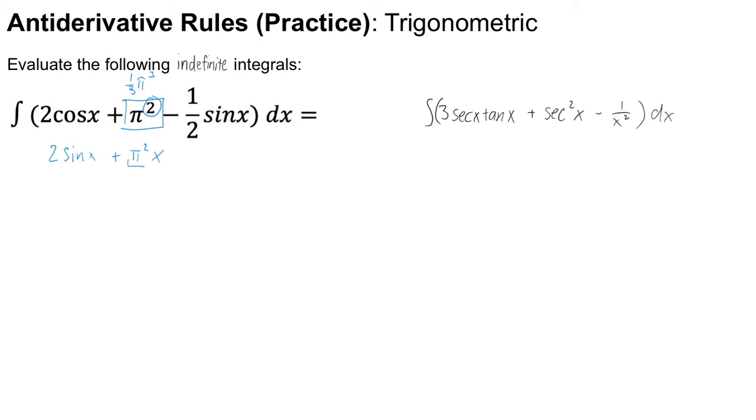Okay, finally the last one we have a negative one half sine x. I know that to get sine of x I need a negative cosine x, right? So it's going to end up as positive one half cosine x because if you take the derivative of one half cosine x you'll end up with a negative one half sine x. Okay, and then plus C, so there we go, that's our answer.